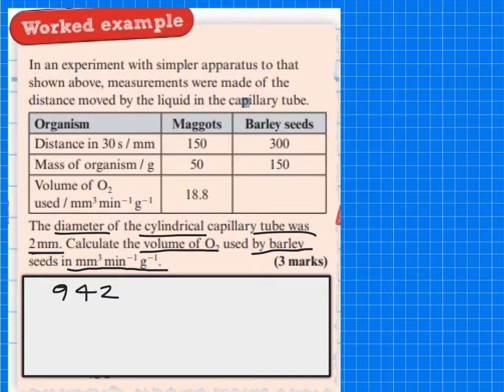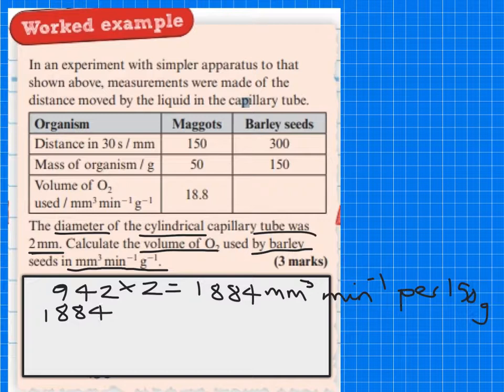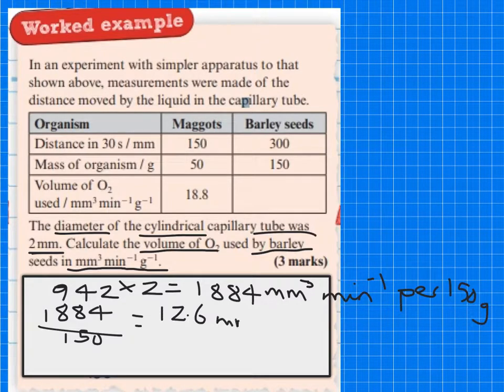So to find it per minute, you're going to times it by 2, because that's after 30 seconds. So that gives you 1,884 millimetres cubed per minute, per 150 grams. So we now need to work out what it is in grams. So it'd be 1,884 divided by 150. And that should give you 12.6 millimetres cubed per minute, per gram. And it's as simple as that. So you obviously should know the volume of a cylinder, that's GCSE. If you don't, then I probably would know what it is, because they might ask you to work out the oxygen uptake.